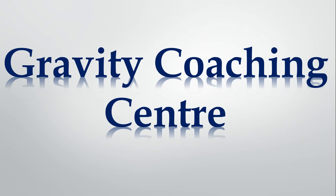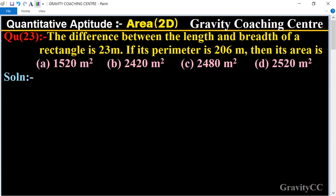Welcome to our Channel Gravity Coaching Center, competitive aptitude chapter area. Question number 23: The difference between the length and breadth of a rectangle is 23 meters. If its perimeter is 206 meters, then its area is?